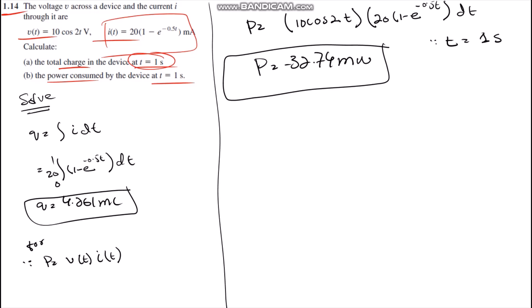We get the value of the charge we have calculated, 4.261 millicoulombs of total charge which is in the device at time equals one second.